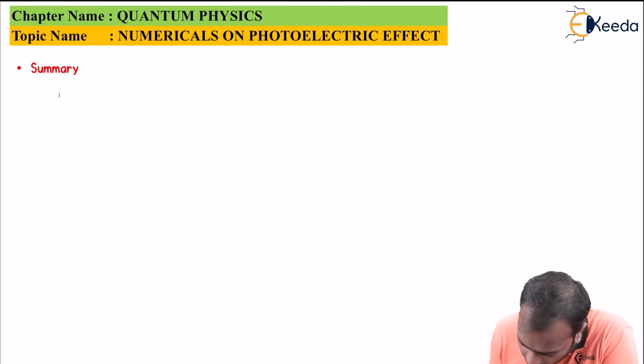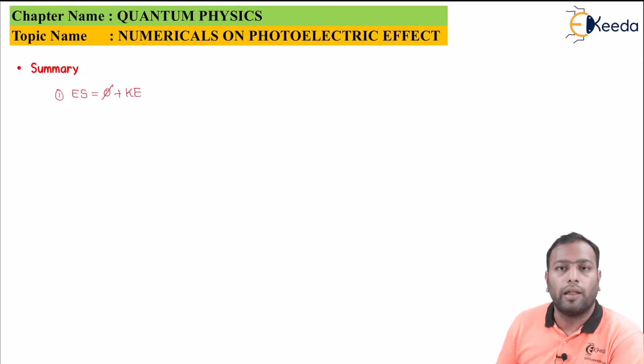First is energy supplied which we called as Es equals to work function plus kinetic energy. Now what are these three parameters and how are they related? Es is the energy supplied, it is the total energy supplied by you. Phi is the work function of an electron as we studied. It is the minimum energy required for the electron to get knocked off and kinetic energy is the energy by which the electron will be accelerated or it will be moving.